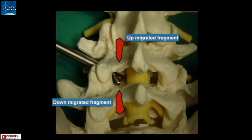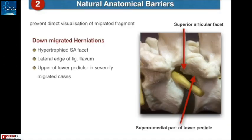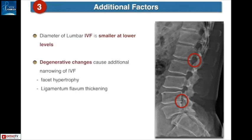It utilizes the intervertebral foramen, which is a narrow window that opens up into a larger spinal canal. Therefore, access to highly migrated disc herniations will not always be very easy. There are certain anatomical barriers which prevent direct access to migrated herniations — these are hypertrophic facet and the upper part of the pedicle. The intervertebral foramen is very wide at the upper lumbar levels, but as you come down towards the L5S1 level, they gradually become very narrow, with additional degenerative changes causing further narrowing and making transforaminal endoscopy more difficult.